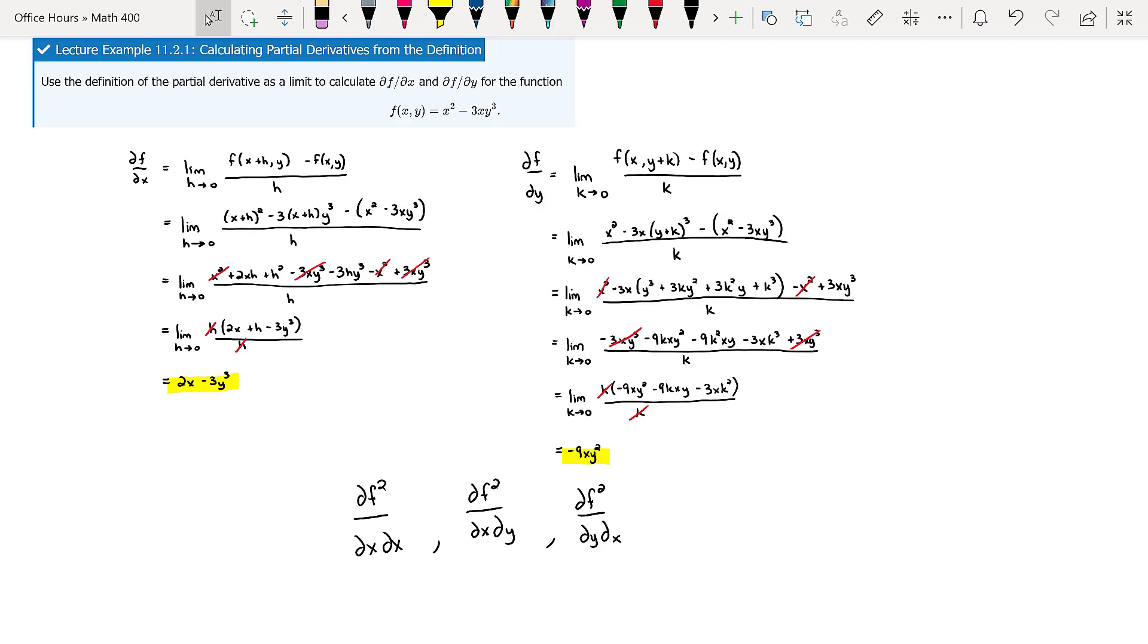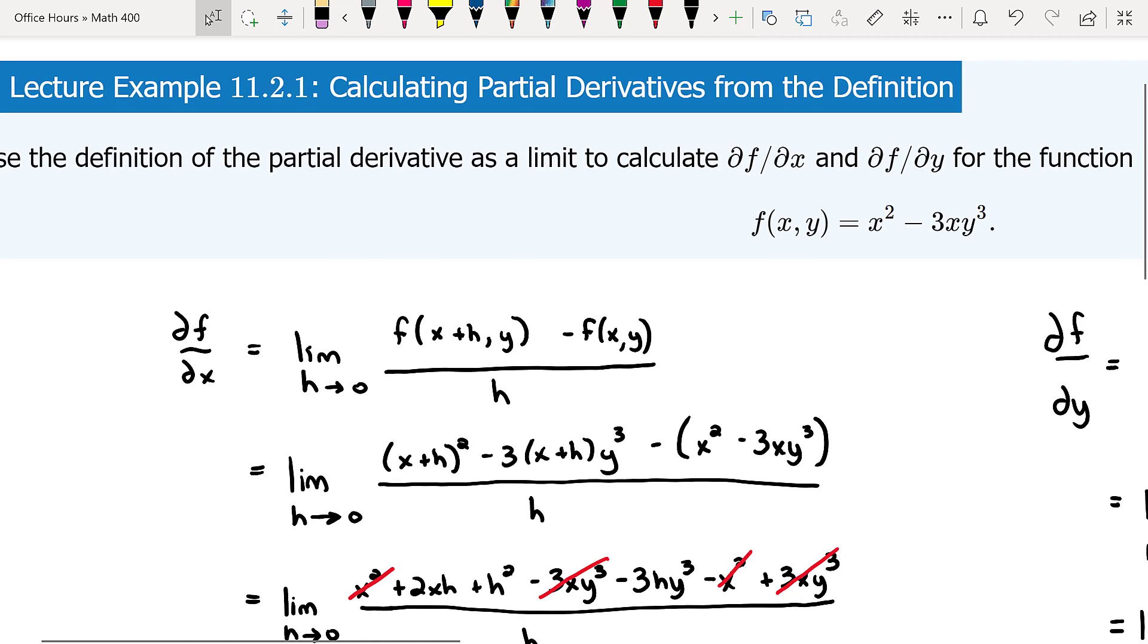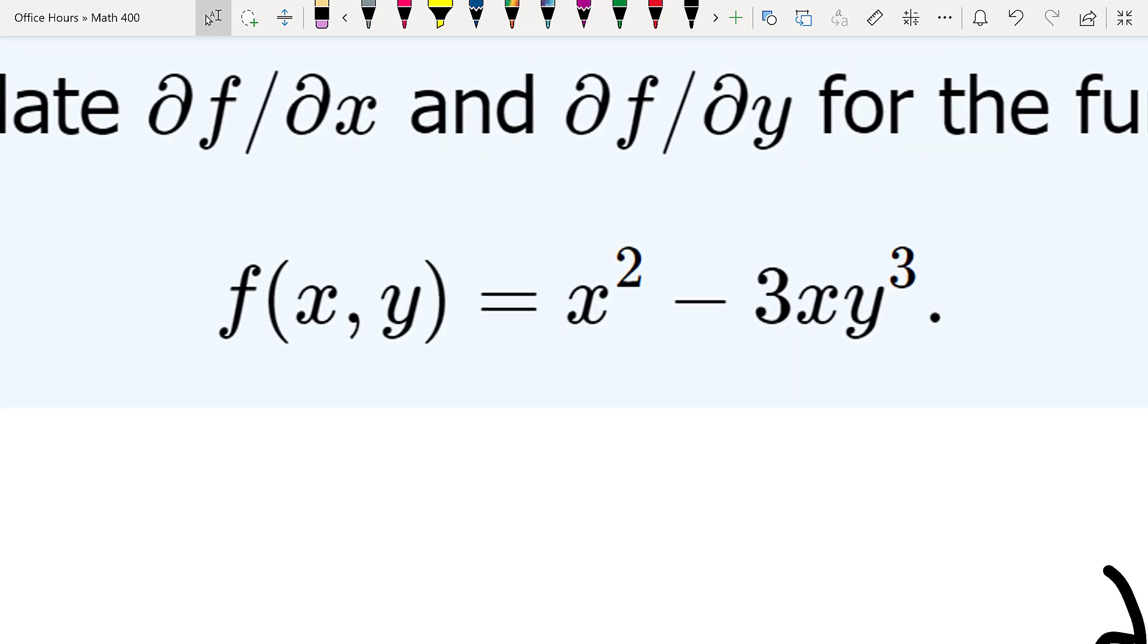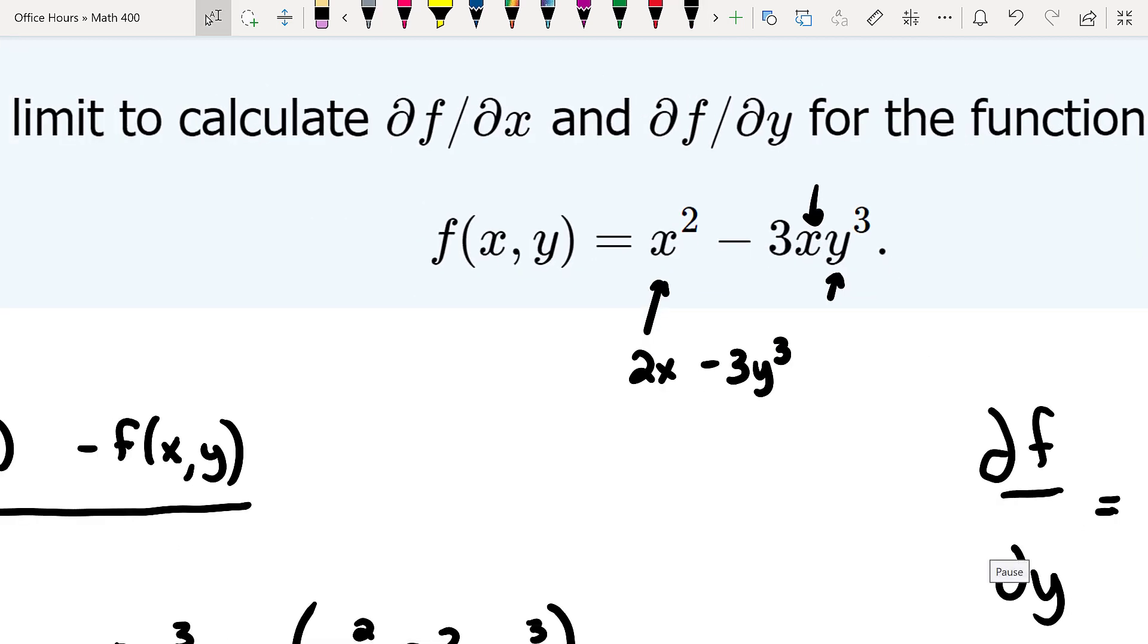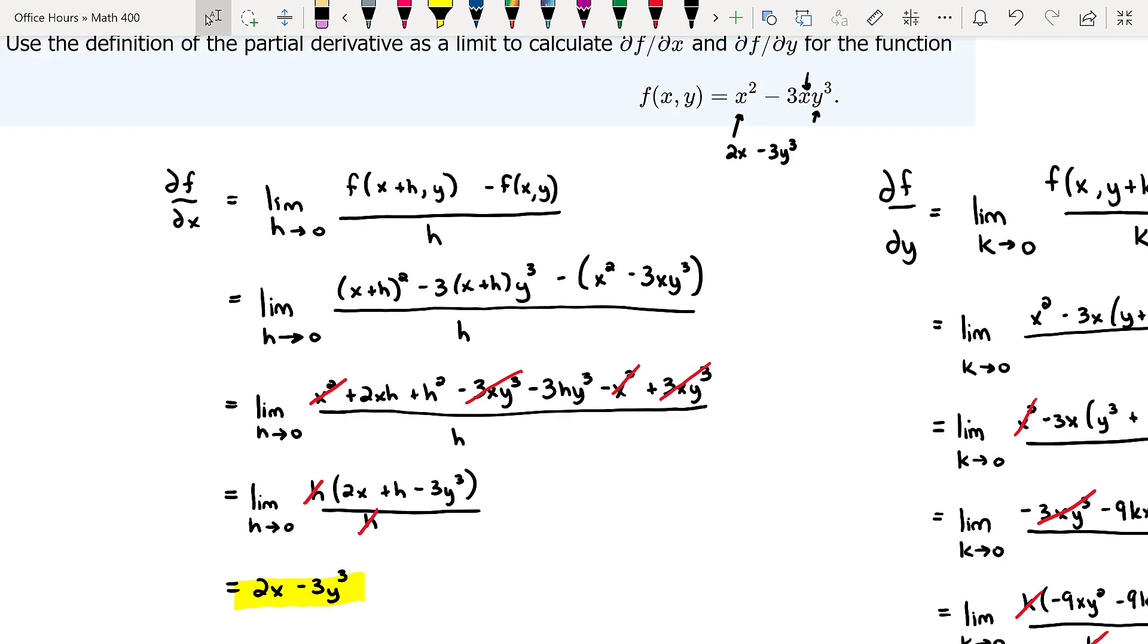What I want to draw your attention to is something I probably mentioned in class already. When we took the partial of f with respect to x, we held y as a constant. Taking the derivative with respect to x gives us 2x. If y is constant and x is our variable, then -3 times a constant times x has derivative -3 times that constant. Remember, y is constant when taking the partial with respect to x. Notice that's exactly what we have below.